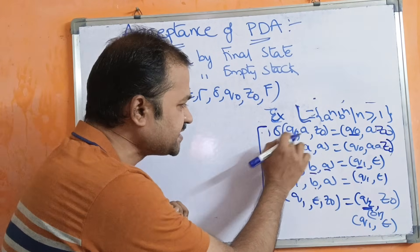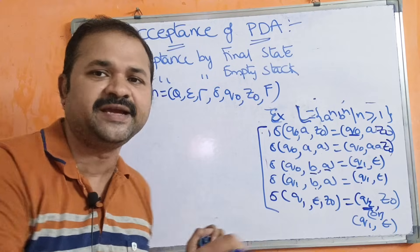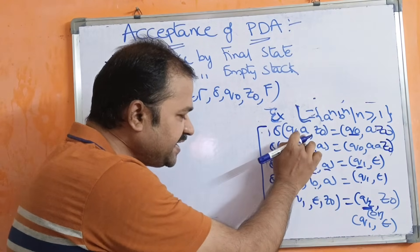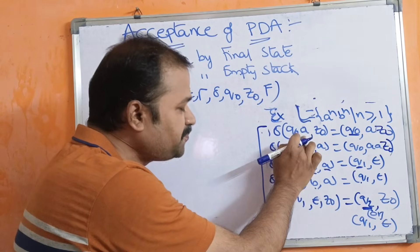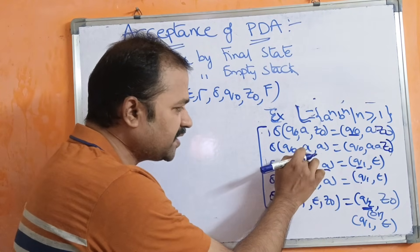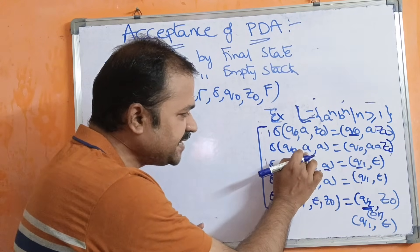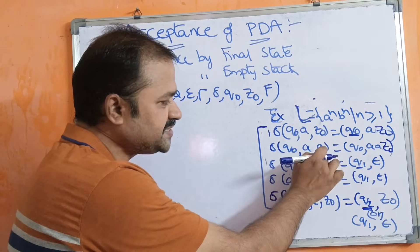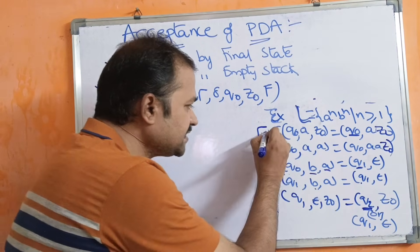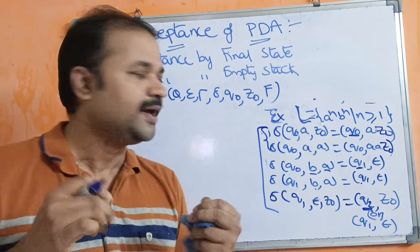The first transition function is δ(q₀, a, Z₀). Here q₀ is the current state, a is the input symbol, and Z₀ is the stack's topmost symbol. The next state is q₀. If we read input symbol a, we simply push this input symbol onto the stack, so the stack will contain a Z₀. Next, δ(q₀, a, a): if we read input symbol a, we push a onto the stack, so the stack contains a a Z₀. These first two transitions are push operations — if we read input symbol a, we perform the push operation with no state change.